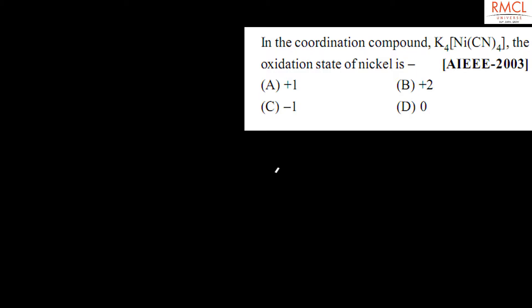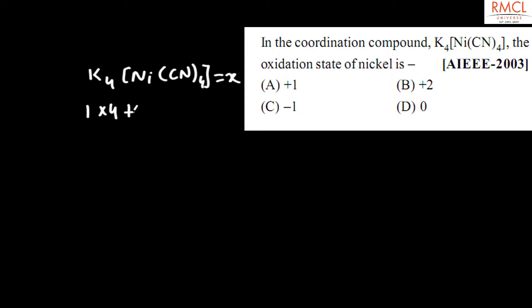This question was asked in IEEE 2003. In the coordination compound K₄[Ni(CN)₄], we need to find the oxidation state of nickel. Let the oxidation number of nickel be X. So 1 multiplied by 4 plus the oxidation state of nickel X, and CN has an oxidation state of minus 1.